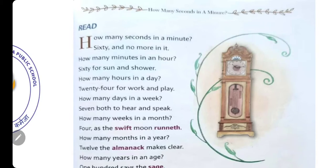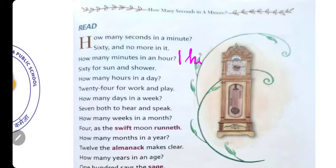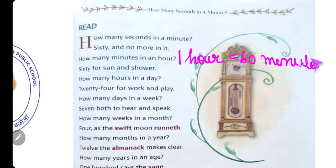Now let's read on. 'How many minutes in an hour?' — इसका मतलब है एक घंटे में कितने minutes होते हैं? '60 for sun and shower' — इसका मतलब है 1 hour is equal to 60 Minutes. So एक घंटे में 60 Minutes होते हैं।